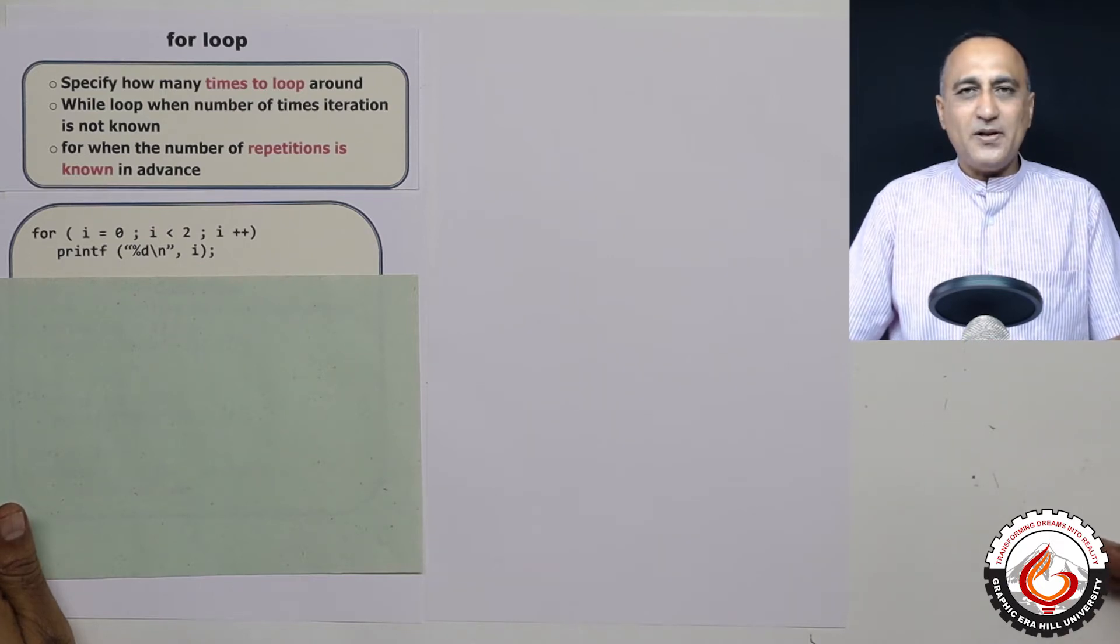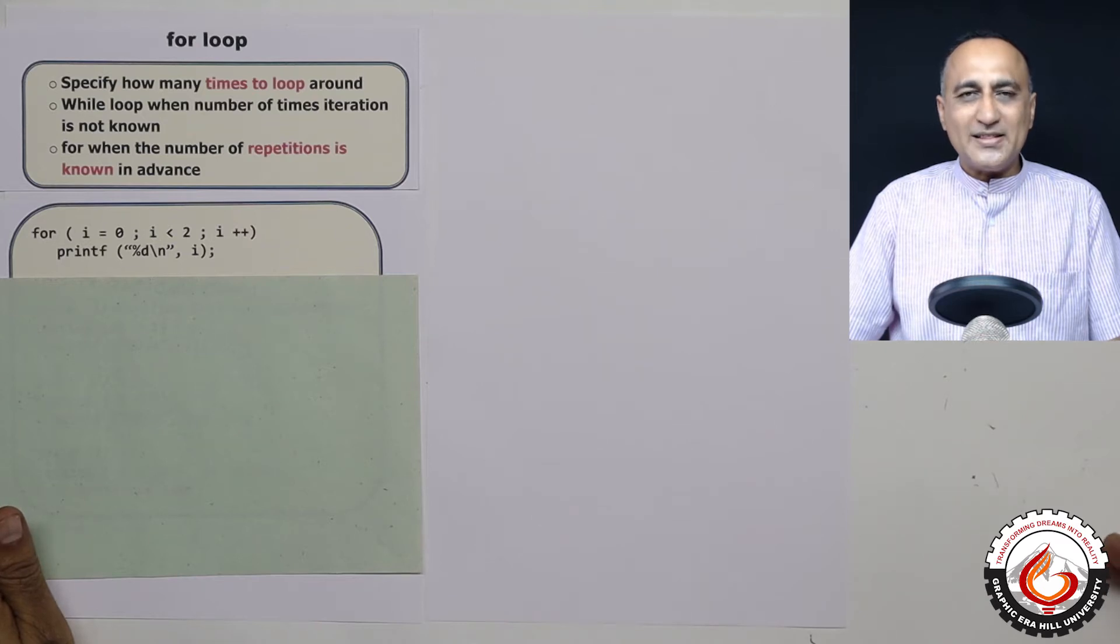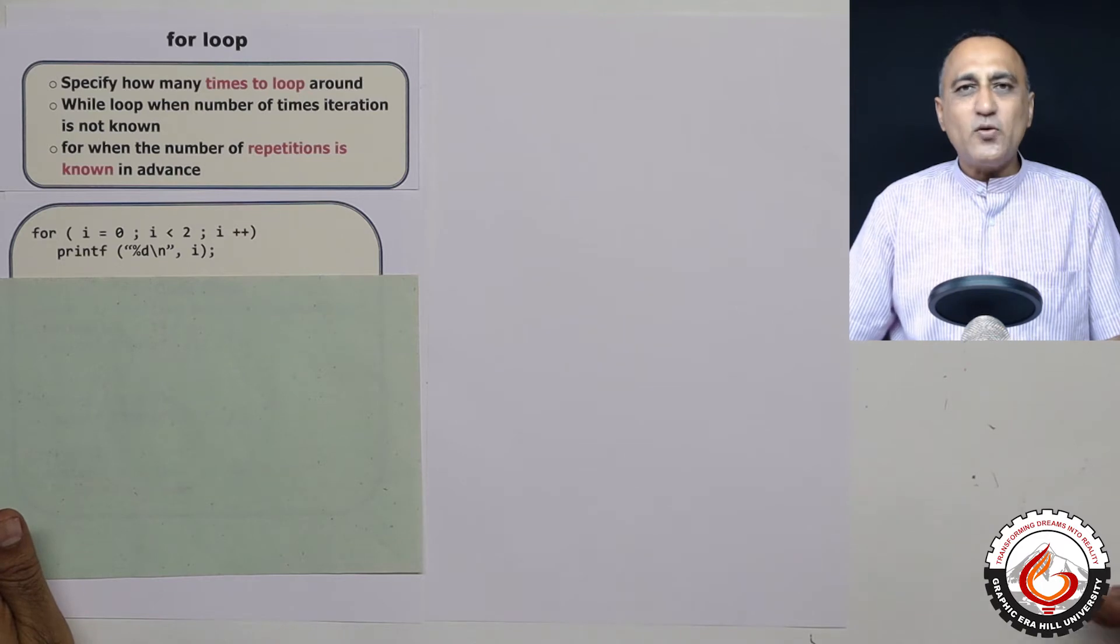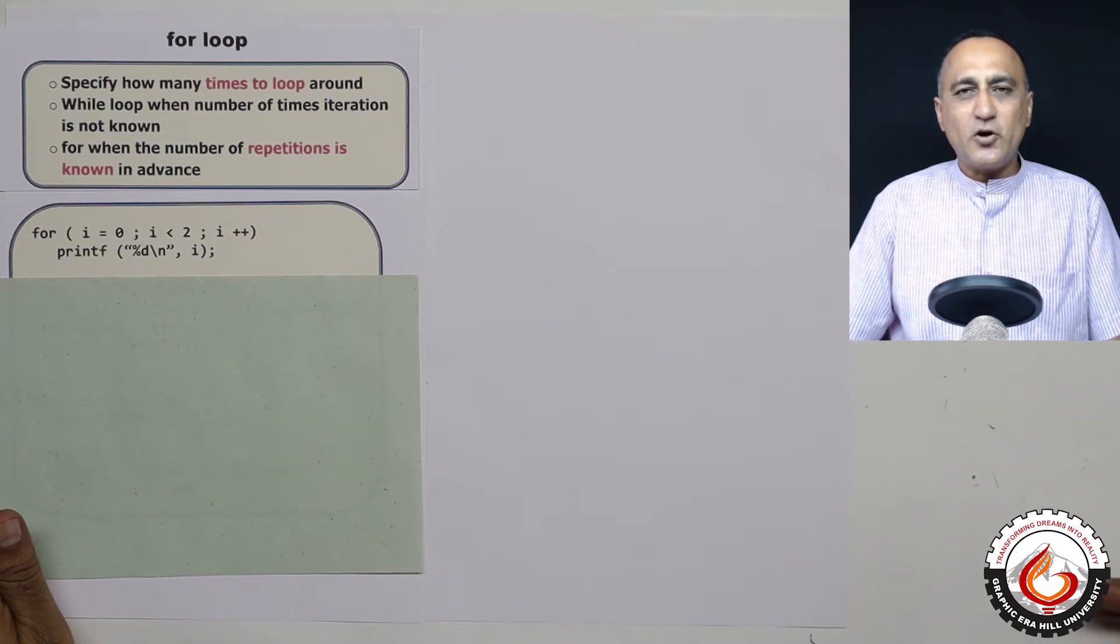Say for example, I want to print from numbers one to ten thousand. So here I know my starting number is one, ending number is ten thousand, and I'm going to do the loop ten thousand times. So this is a very good example where I'm going to use the for loop.